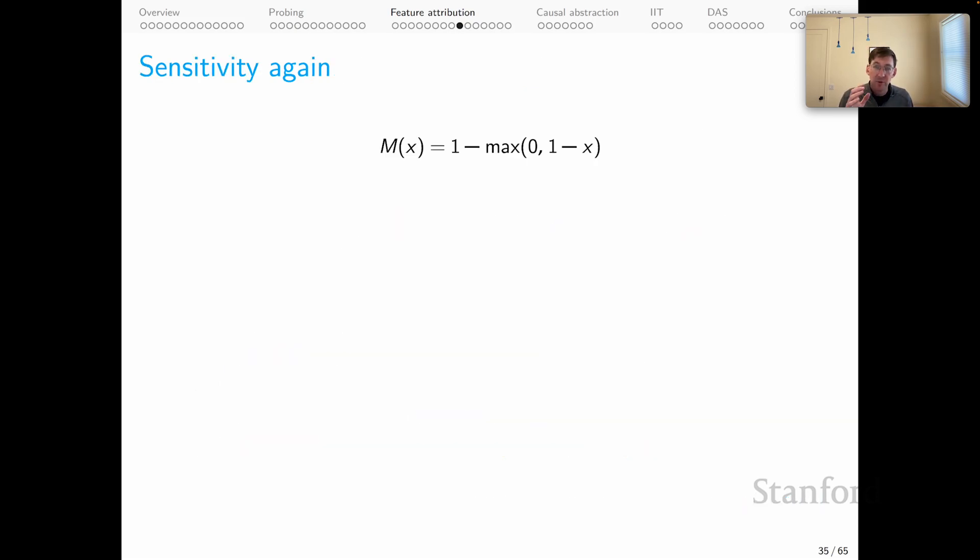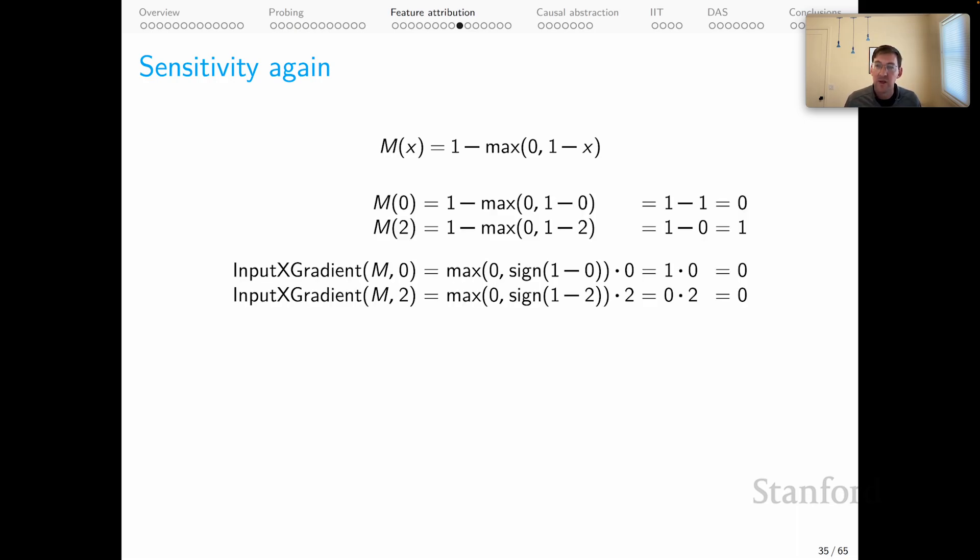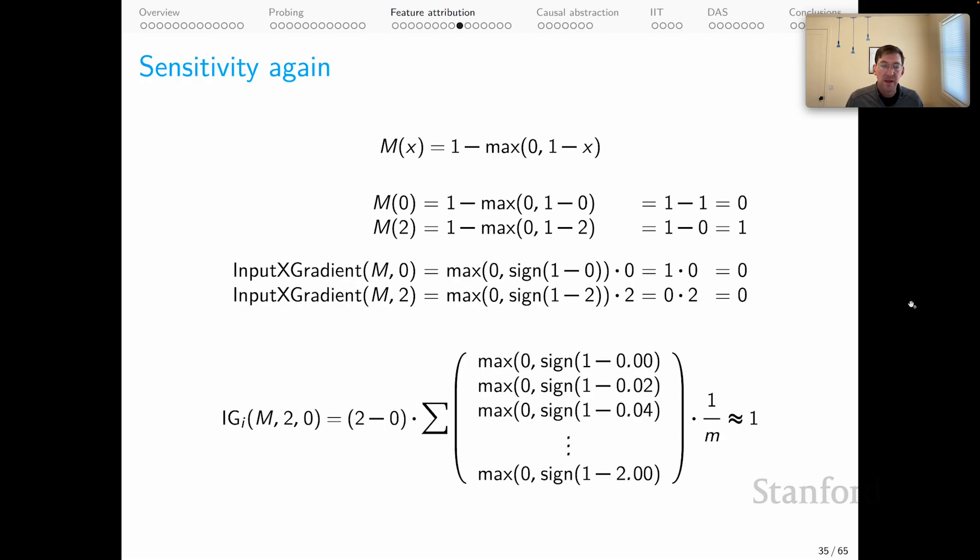Let's return to sensitivity. We have our model M with these one-dimensional inputs, one minus ReLU applied to one minus x. This is the example from Sundararajan et al. I showed you before that inputs by gradients fail sensitivity for this example in this model. Integrated gradients does better. And the reason it does better, you can see this here, we are summing over all of those gradient calculations and kind of averaging through them. And the result of all of that summing and averaging is an attribution of approximately one, depending on exactly which steps that you decide to look at for the IG calculation. So this example is no longer a counterexample to sensitivity. And in fact, it's provable that IG satisfies the sensitivity axiom.